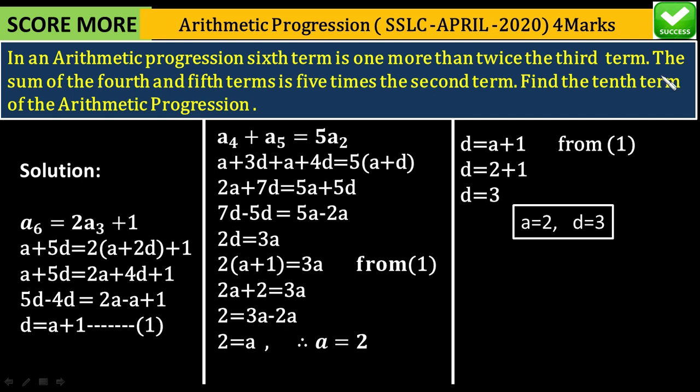Now we have to find the tenth term, a₁₀. The formula is aₙ equals a plus (n-1)d. So a₁₀ equals 2 plus (10-1) times 3. Simplify: a₁₀ equals 2 plus 9 times 3, equals 2 plus 27.